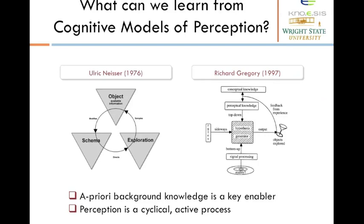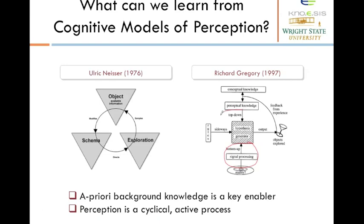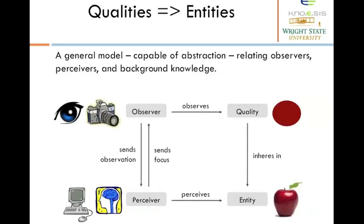Here are two examples of cognitive models of perception. The one on the left was proposed by Neisser in 1976. This model consists of three parts: the object available in the environment, the schema as the conceptualization of the environment, and exploration as a step done by the user. Richard Gregory proposed another cognitive model of perception in 1997, consisting of bottom-up processing and top-down processing, both integrated in this cognitive model.